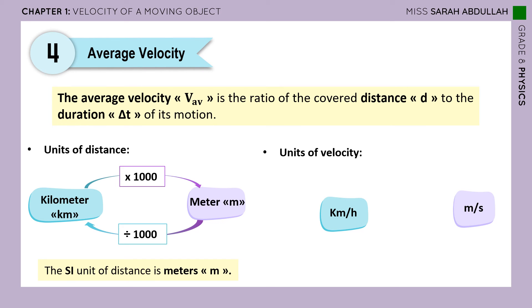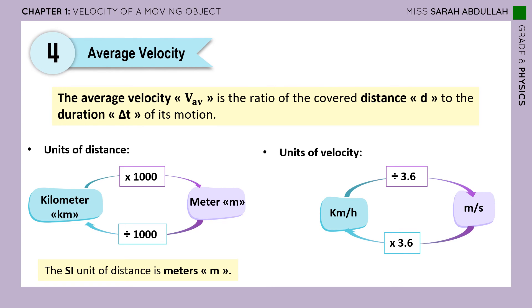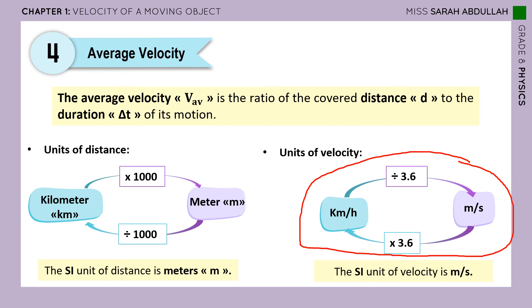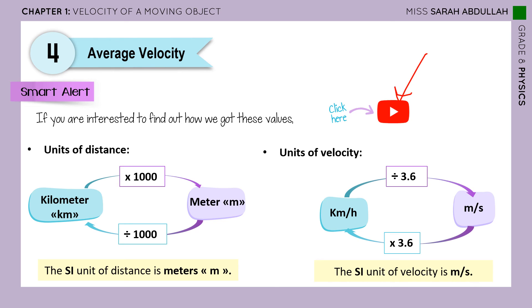We have different units of distance: kilometers and meters. To convert from kilometers to meters, multiply by 1,000; from meters to kilometers, divide by 1,000. The SI unit of distance is the meter. For velocity units: to convert from kilometers per hour to meters per second, divide by 3.6; and from meters per second to kilometers per hour, multiply by 3.6. The SI unit of velocity is meters per second.